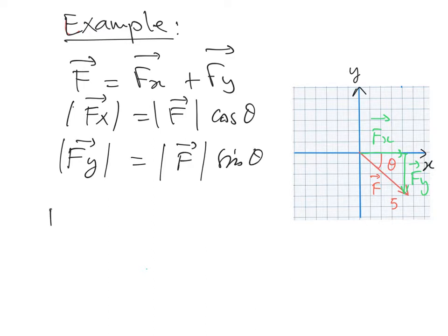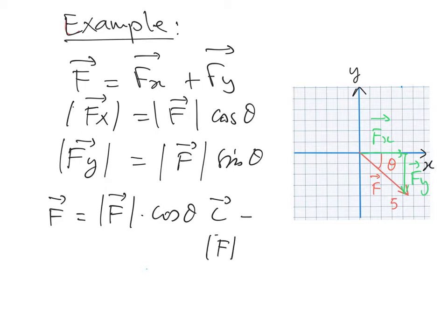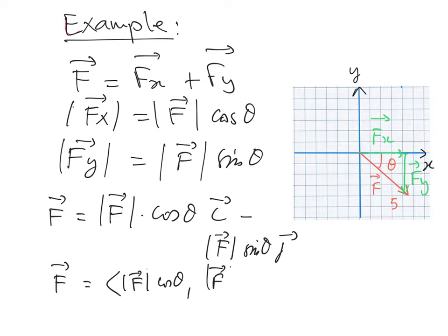Going back to the vector form, F equals the magnitude of F cosine theta times I, minus the magnitude of F sine theta times J. The minus is due to the fact that the vector Fy is directed along the negative Y direction. In component form, F can be written as (|F| cosine theta, −|F| sine theta).